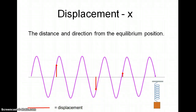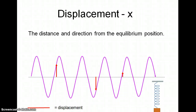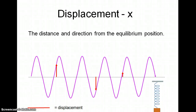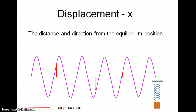Just a reminder of some of the terms that we're going to use, that we've already looked at before in waves. When we measure the displacement of a wave — or in this case something that is oscillating — we're measuring the distance and the direction from the equilibrium position. The equilibrium position is the position, for example, where the mass would be when it wasn't oscillating, when the forces are balanced.